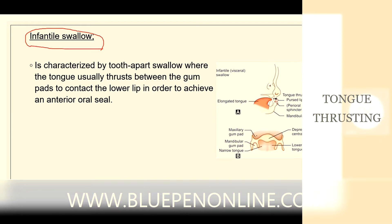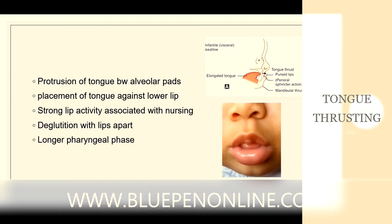Here you can see the maxillary gum pad, the lower gum pad, and the lower tongue position. The protrusion of the tongue between the alveolar pads will be present. Attachment of the tongue against the lower lip and strong lip activity is associated with nursing.